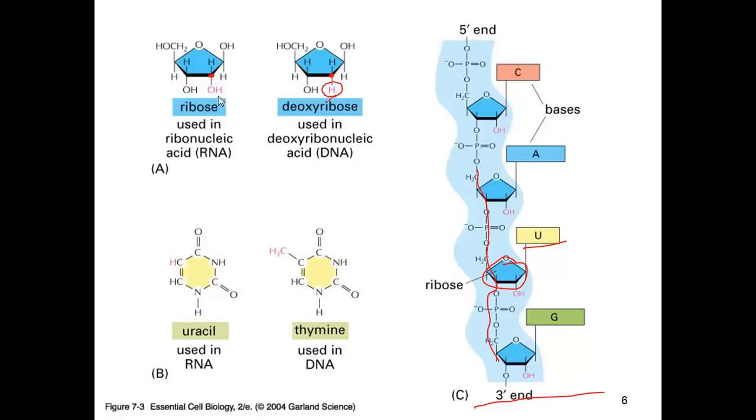Whereas in ribonucleic acid, it has the hydroxyl group at that position. As we have mentioned several times before, the bases are slightly different. Both RNA and DNA uses the bases C, A, and G. However, RNA uses uracil instead of thymine.